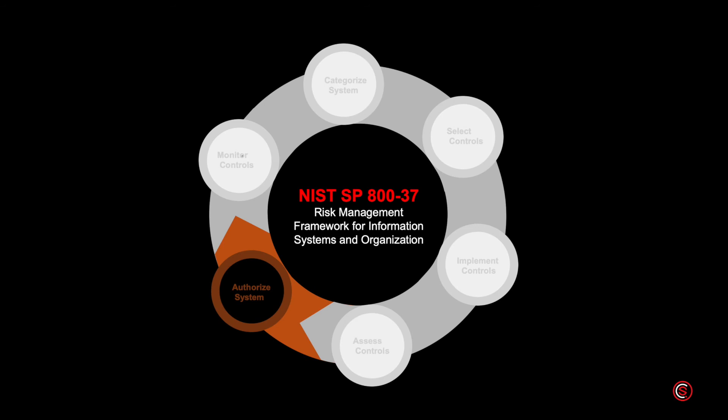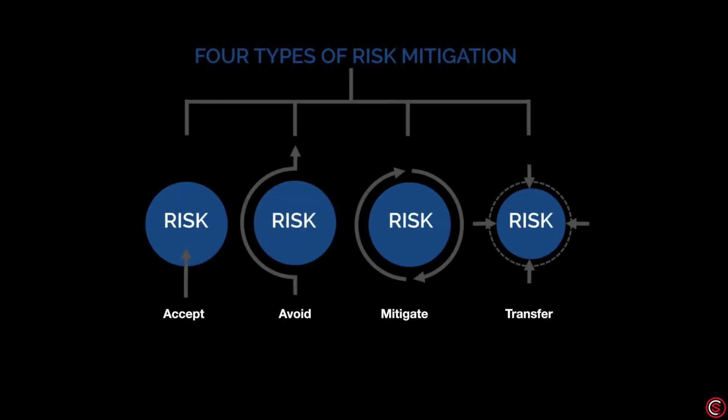Step five is authorization — authorizing the information system to operate based on an acceptable risk level. The security authorization package contains: one, the security plan; two, the SAR; and three, the Plan of Action and Milestones, also known as POA&M. Authorizing officials use these documents to make risk-based authorization decisions. After risk determination, an organization can respond by accepting, avoiding, mitigating, sharing, or transferring risk, or a combination thereof. More resources are directed to higher-priority risks. This step integrates into the implementation phase of the SDLC.